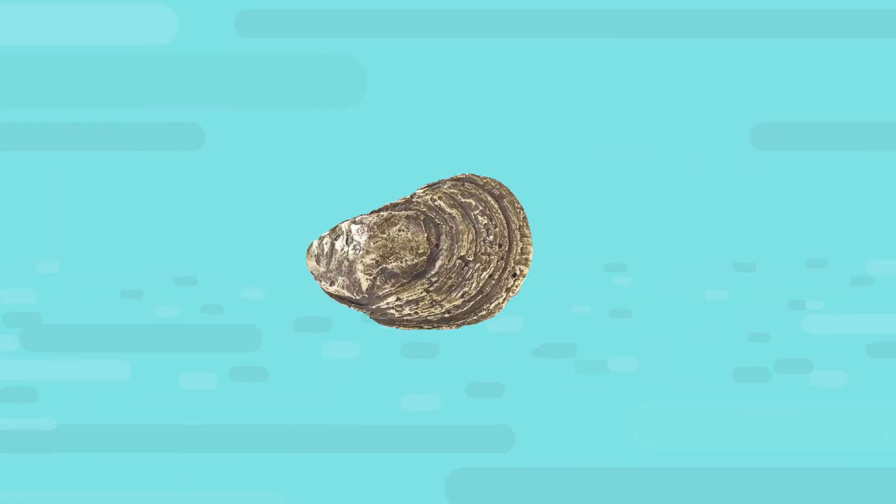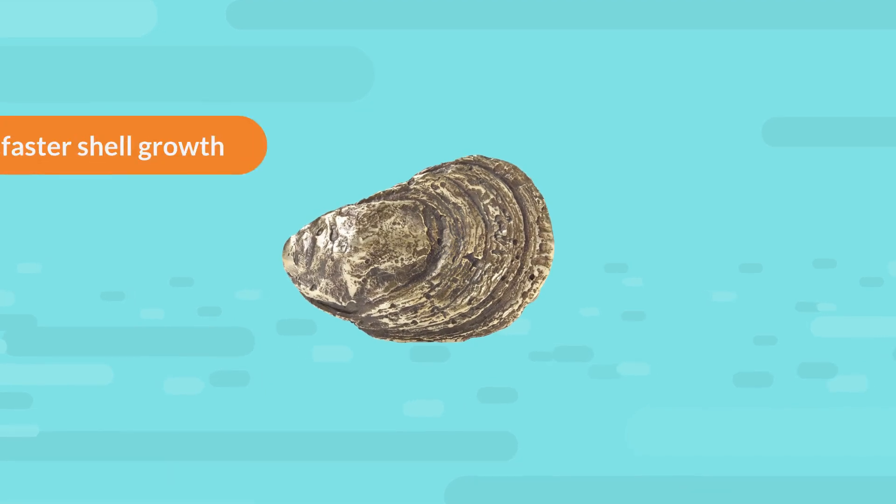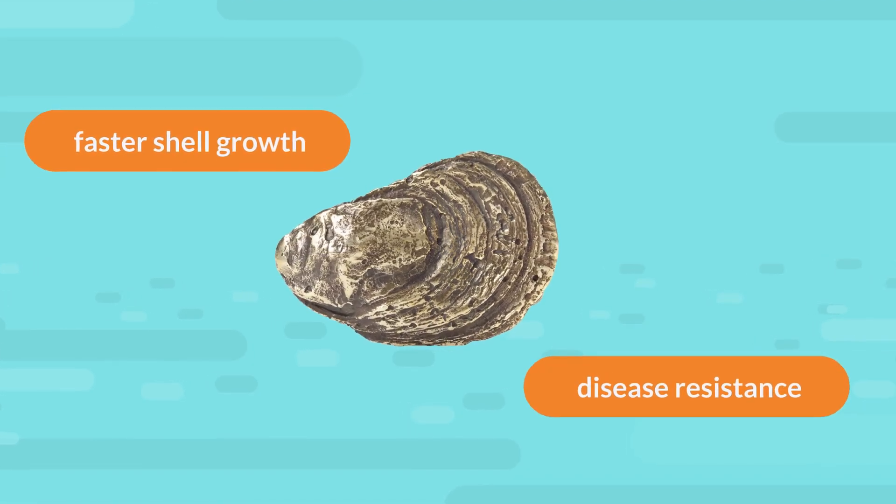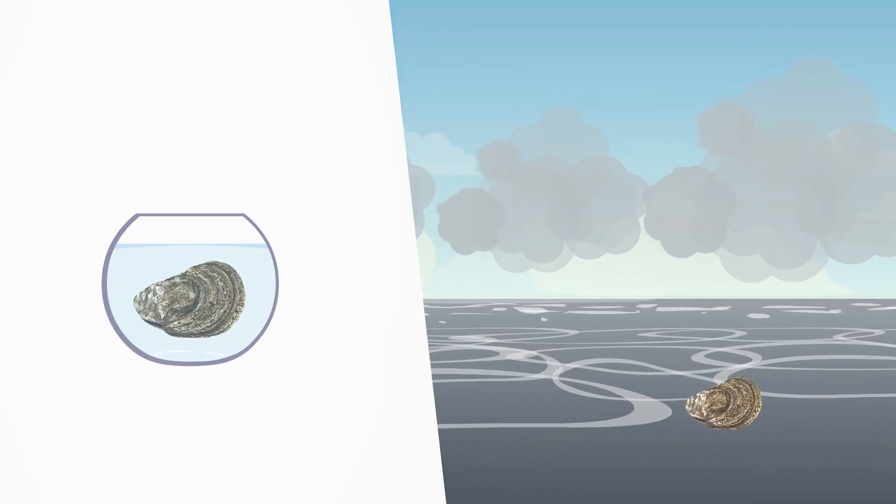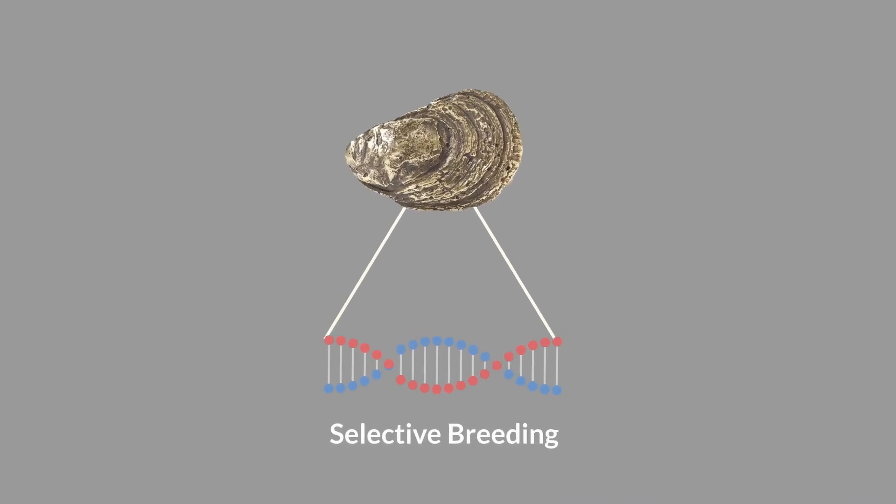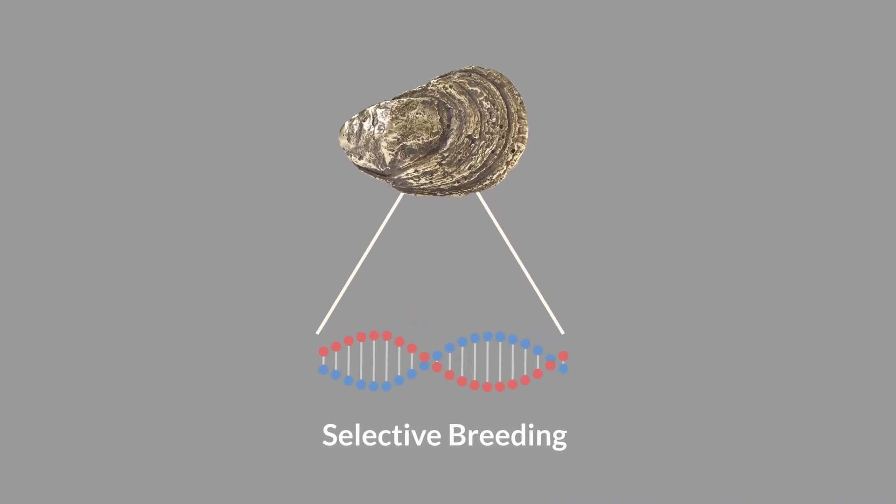Susan's team selectively bred oysters for faster shell growth and disease resistance. These oysters were able to grow larger shells compared to wild oysters in more acidic environments. This suggests that selective breeding could be an important strategy for sustainable shellfish farming.